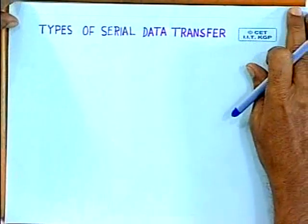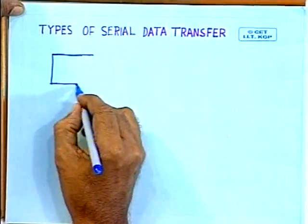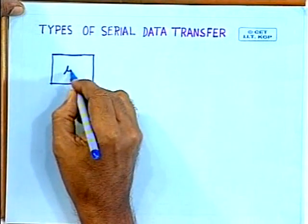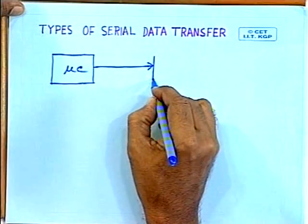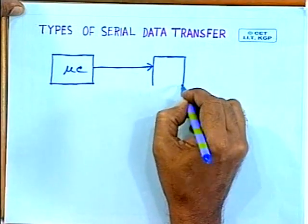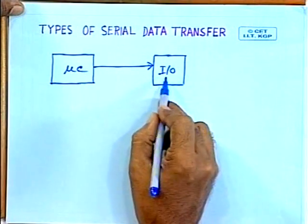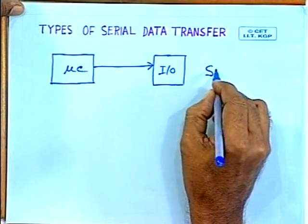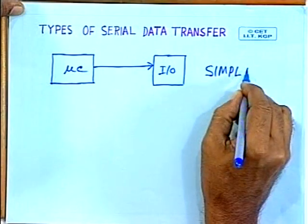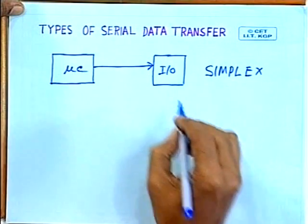Let us see what are the different types of serial data transfer. The simplest one: you have a microcomputer communicating to the IO device only in one direction — data transfer takes place only from microcomputer to IO device. This is known as simplex, where the IO device is only receiving data from the microcomputer. For example, it can be a printer.